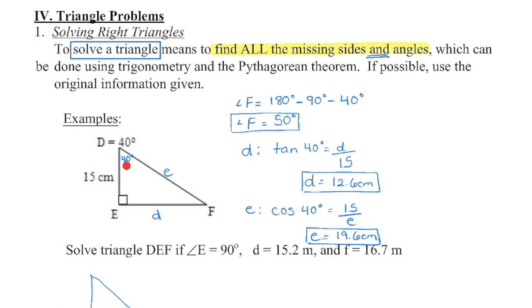So we know these two angles. Could we find the third one? Well, we also know the sum of the interior angles in a triangle is 180 degrees. So if I take 180 and subtract those two, I can find my missing angle F. Remember, we use a capital letter to represent that, and F is going to be 50 degrees.